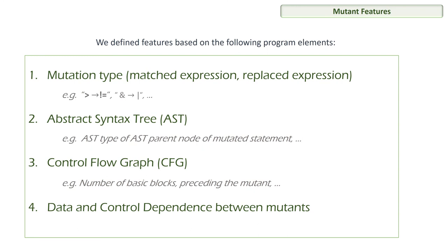This is how we apply our approach to select fault-revealing mutants. During the learning phase, we have a corpus of faulty programs where we create mutants. For each mutant, we extract static code features and compute the fault revelation of the mutants. We use this information to train the machine learning classifier. During validation, the program under test is mutated, features are extracted for each mutant, and through the model we compute the probability of each mutant being fault-revealing. We then select the mutants with the highest probability to be used for testing.